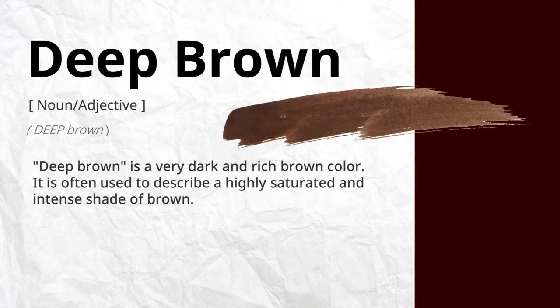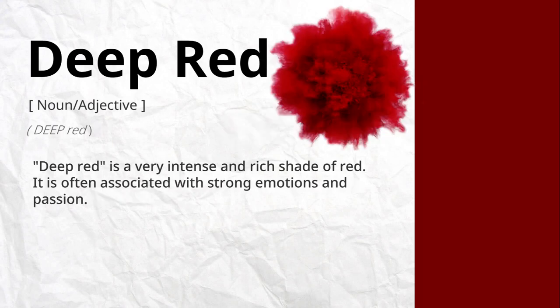Deep brown is a very dark and rich brown color. It is often used to describe a highly saturated and intense shade of brown. Deep red is a very intense and rich shade of red. It is often associated with strong emotions and passion.